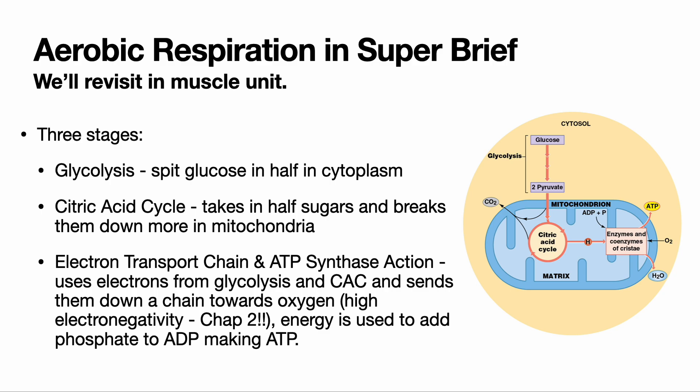In glycolysis — 'lysis' means to split, 'glyco' refers to sugar — we split glucose in half, producing pyruvate. This happens in the cytoplasm, not the mitochondrion. We get a little ATP and collect some electrons and protons. In the citric acid cycle, also called the Krebs cycle, those pyruvates are further broken down. This releases CO2 — one reason we breathe out CO2 — produces a tiny bit more ATP, and collects more electrons and hydrogen protons.